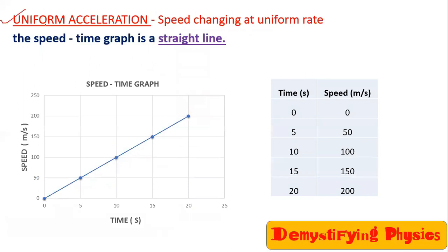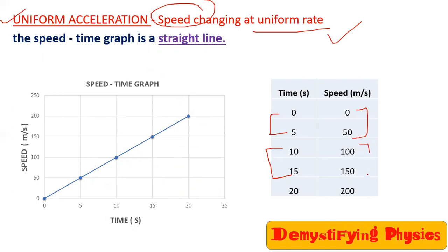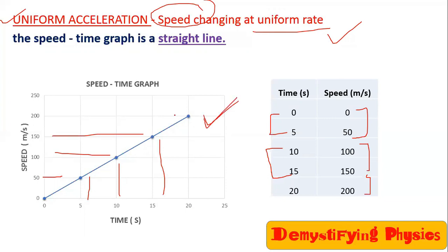The next case is uniform acceleration. Uniform acceleration means speed is increasing at a uniform rate. In this example, in every 5 seconds the speed is increasing by 50 meters per second. When you plot this data — (0,0), (5,50), (10,100), (15,150) — you get a straight line. So a straight line with positive slope represents uniform acceleration.